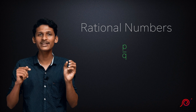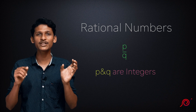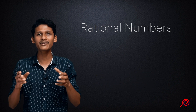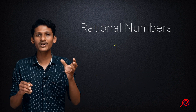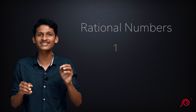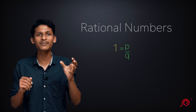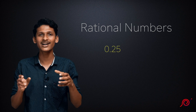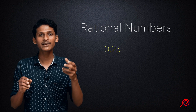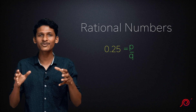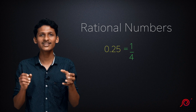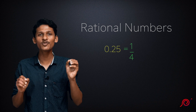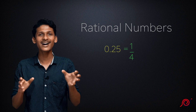If we write P by Q, P and Q must both be integers, and Q must not equal 0. For example, 1 is a rational number because it can be written as 1 by 1, which is P by Q form. Also, 0.25 is a decimal number that is rational, because 0.25 equals 1 by 4, so it fits the P by Q form. Therefore, 0.25 is a rational number.